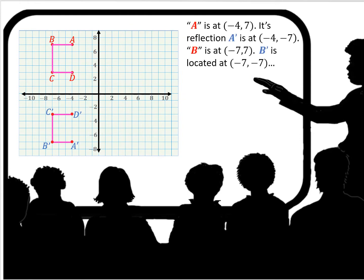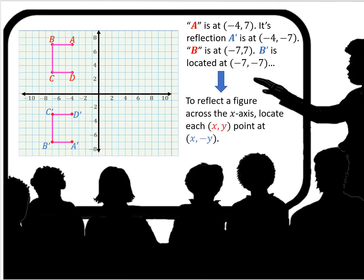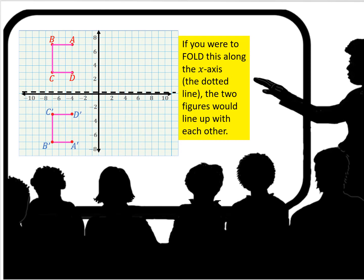Now we are looking at the same original figure, this time reflected over the x-axis. Point A of the original figure is at negative 4, 7, and its reflection point is at negative 4, negative 7. Point B's original location is negative 7, 7, and its reflected point B location is negative 7, negative 7. To reflect a figure across the x-axis, locate each (x, y) point at (x, negative y). Just like before, if you were to fold this along the x-axis where the dotted line is, the two figures would literally line up. The reflection is a mirror image of the original.